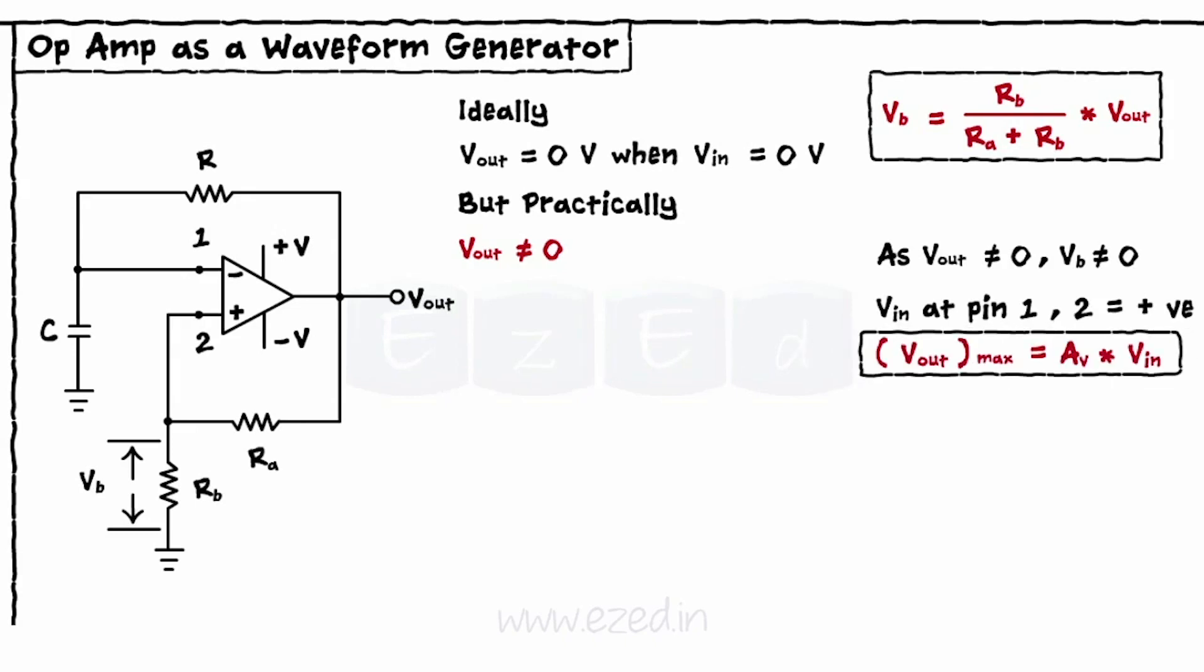Say AV, and reaches its maximum value, VOmax. Thus, we get the positive half of the square wave.